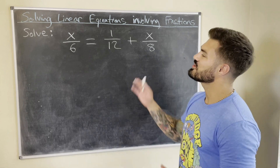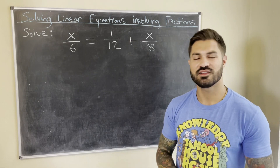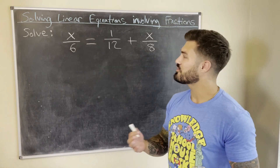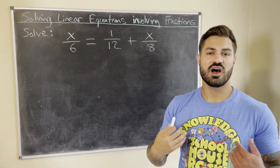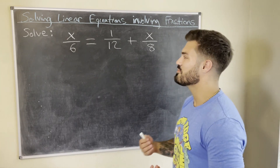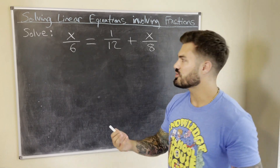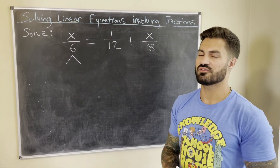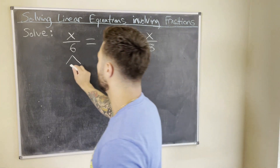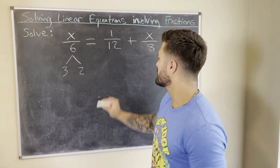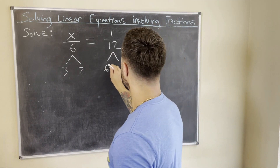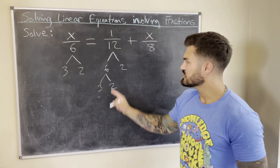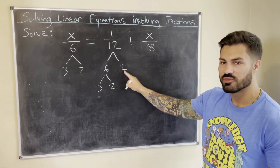Our last example is another equation involving three different fractions. I really encourage you to pause the video and try this on your own first, then press play to check your answer. We need the least common denominator between these three fractions. I'll use prime factorization again — I find this method is the quickest when there are three or more integers. So: 6 equals 3 times 2. For 12, we get 6 times 2, but 6 isn't prime, so we keep breaking it down: 12 equals 3 times 2 times 2.